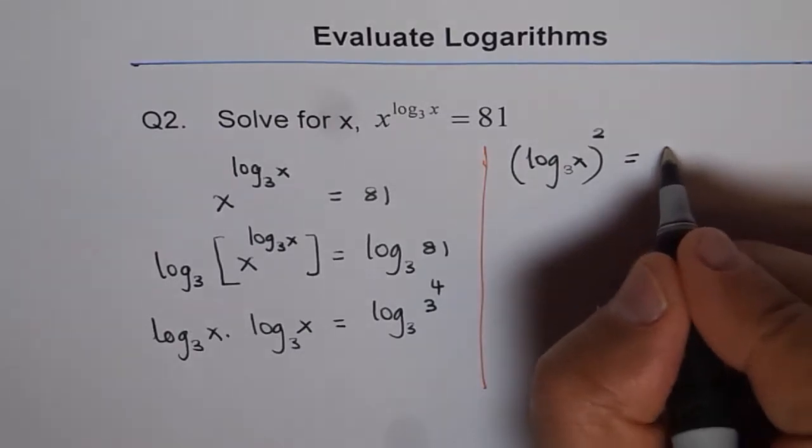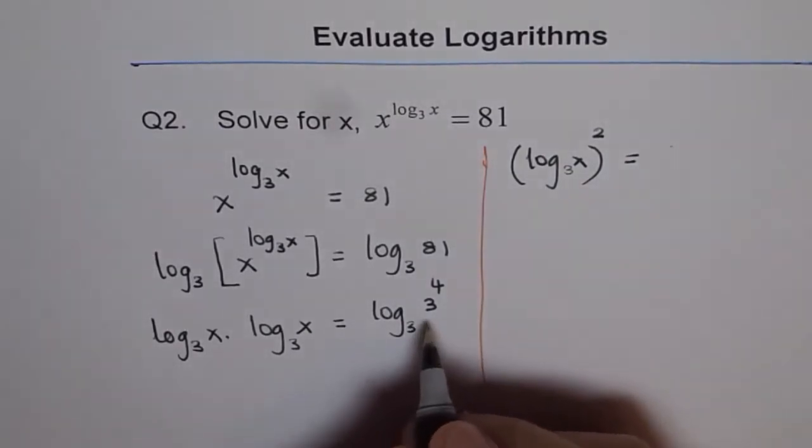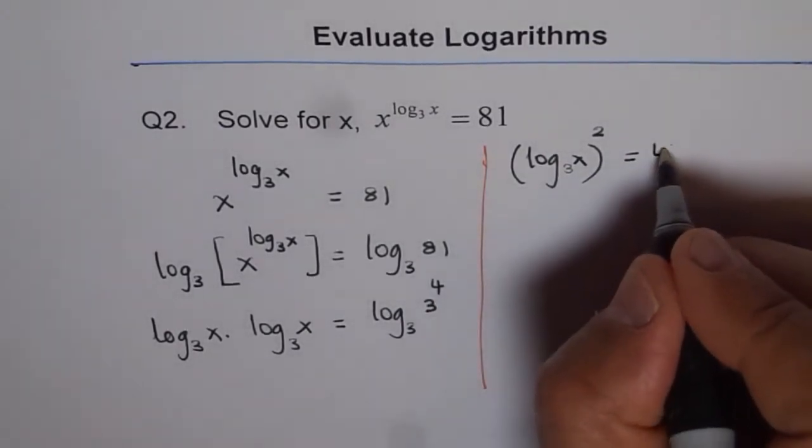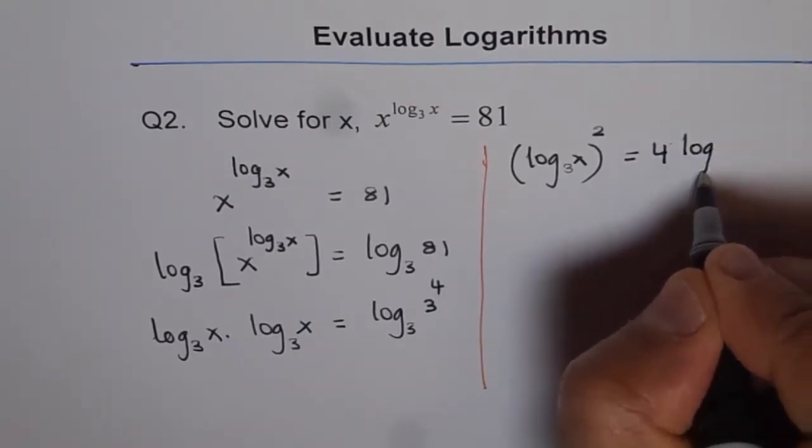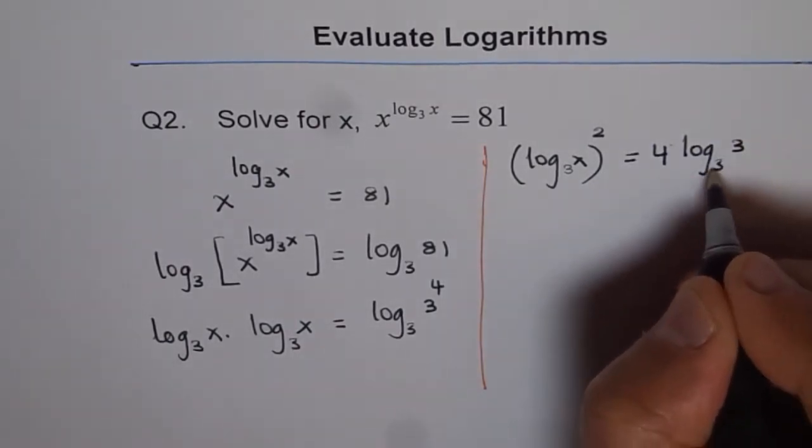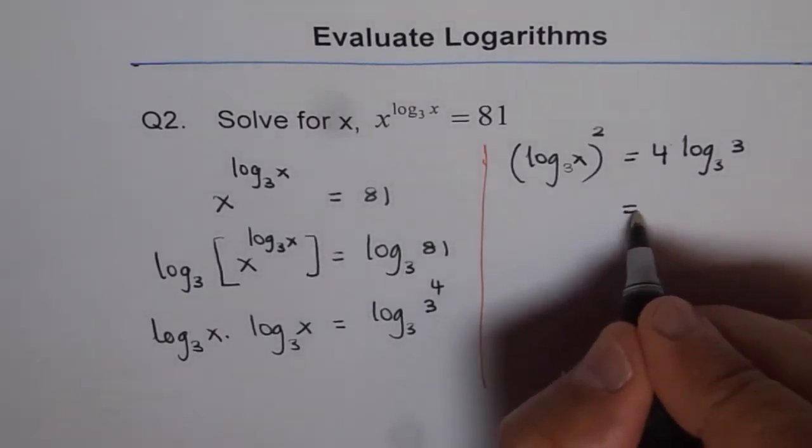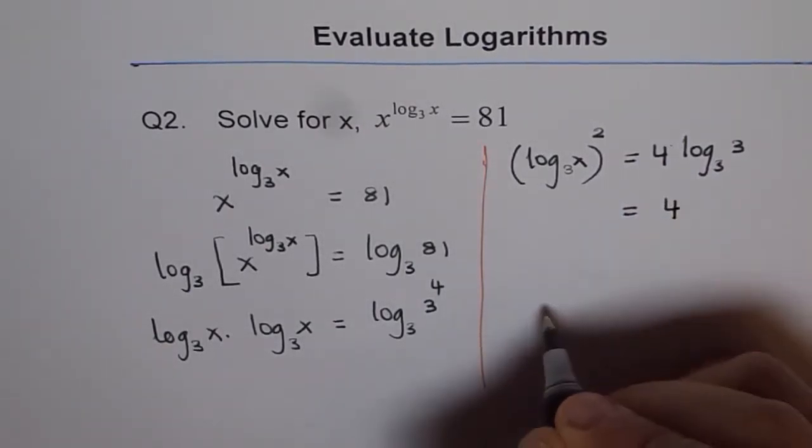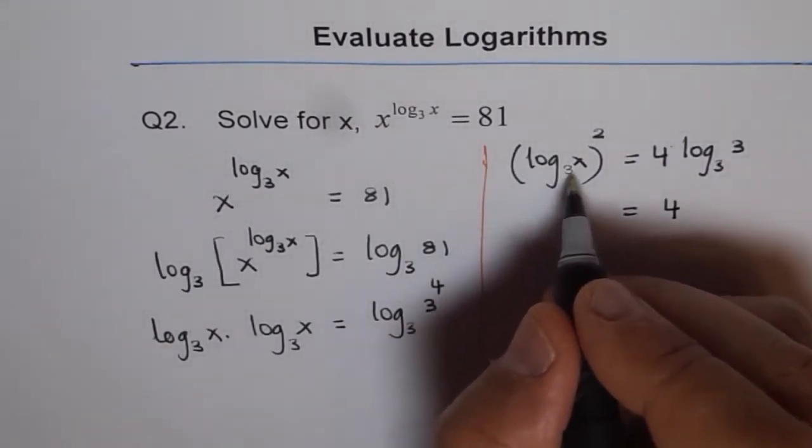Which is equals to log base 3 of 3 to the power of 4. So, using power rule, we have 4 into log base 3 of 3. Log base 3 of 3 is 1. So, we can write the right hand side as just 4, which is log base 3 of x square.